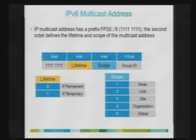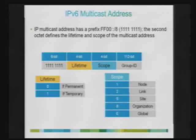As far as scope goes: you have node-level scope for nodes with multiple interfaces; link-local scope where multicast addresses are not forwarded beyond the link; site-local scope with scope ID 5; and organizational-level scope with scope number 8. The demarcation of sites is up to administrators to define. Globally assigned multicast addresses have a scope of E.